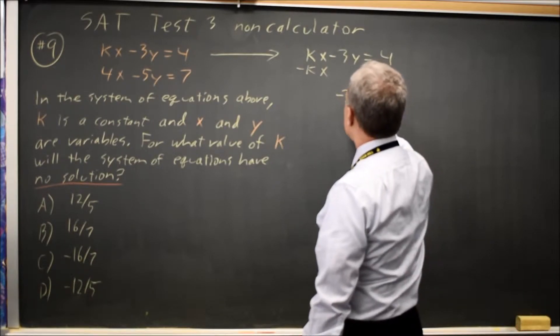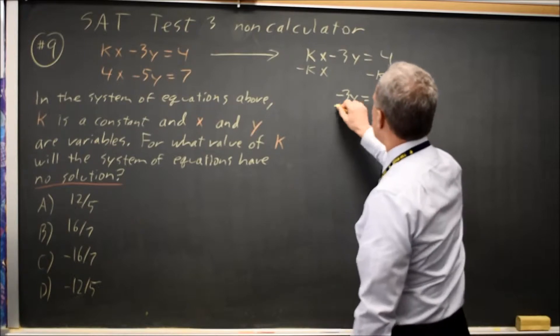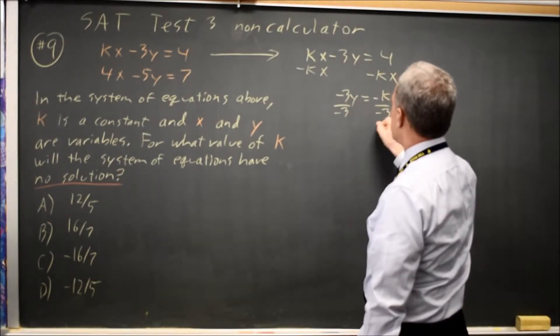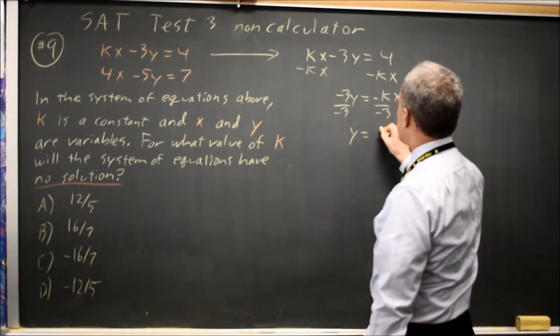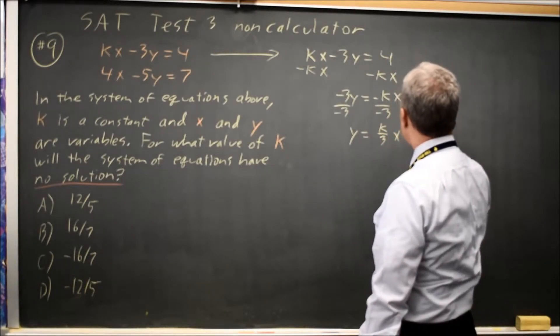Negative 3y equals negative kx plus 4. Divide by negative 3. y equals negative k over negative 3 is k over 3x minus 4 over 3.